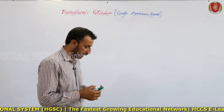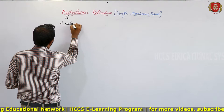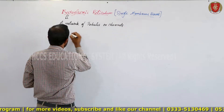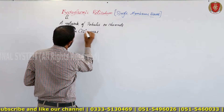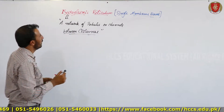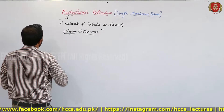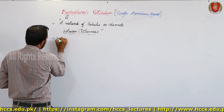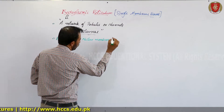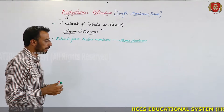Endoplasmic reticulum is basically a network of tubules and channels between cisternae. These tubules and channels together form a network that we call endoplasmic reticulum. It extends from the nuclear membrane to the plasma membrane.